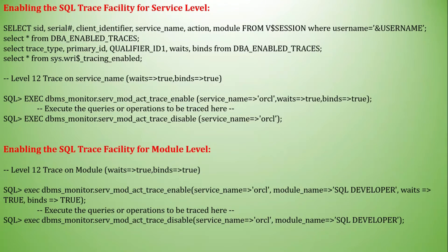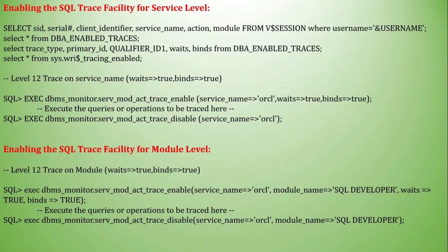In V$SESSION, you can specify a session by referencing the OS_USER, USERNAME, or PROGRAM column. You can enable tracing for the current session level and for a different user session level. To identify the service name for the username from V$SESSION, you can enable tracing at the service level. You can query SELECT * FROM DB_ENABLED_TRACES or SELECT TRACE_TYPE, PRIMARY_QUALIFIER_ID, WAITS, BINDS FROM DB_ENABLED_TRACES, or SELECT * FROM SYS.WRI$_TRACING_ENABLED.